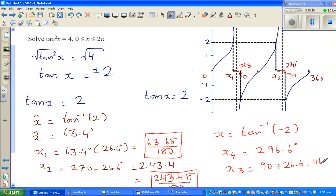Which is 116.6 degrees. If you want to change this into radians, this is 296.6π over 180, and this is 116.6π over 180.